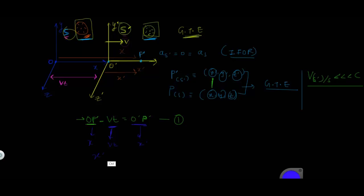So we have X' = X − VT. This is the relation between distances in the x-direction in both 3D systems — this is a Galilean transformation equation. For y: since there is no motion of S' in the y-axis direction, y' = y. This is equation two. Similarly, for the z-axis, there's no motion in that direction, so z' = z.